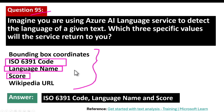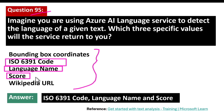The language name indicates the name of the detected language, such as English, French, or Spanish. The ISO 639-1 code is the two-letter code representing the detected language, like EN for English or FR for French. The score represents the confidence level of the detection, usually expressed as a decimal between 0 and 1. A higher score indicates greater confidence in the accuracy of the detected language.